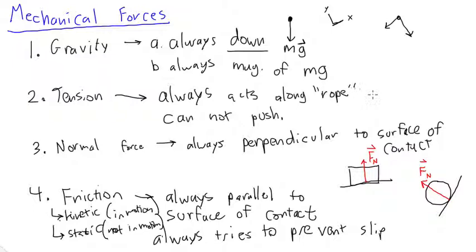For example for tension there has to be a rope. If there's no rope then there's no tension. And then the normal force, you know, is always going to be perpendicular to surface of contact which means the things have to be touching. It has to be touching, the two objects have to be touching to have normal force. And friction also requires contact and it's always going to parallel the surface of contact, always trying to prevent slipping. They don't disobey these rules.